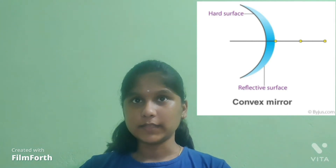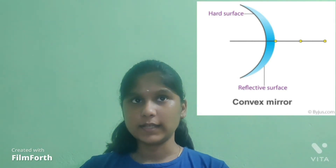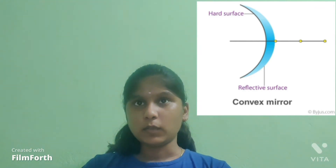My name is Shinti. Today I am going to talk about convex mirror. Convex mirror is a curved mirror where the reflective surface bulges out towards the light source. These bulging out surfaces reflect light outward and are not used to focus light.